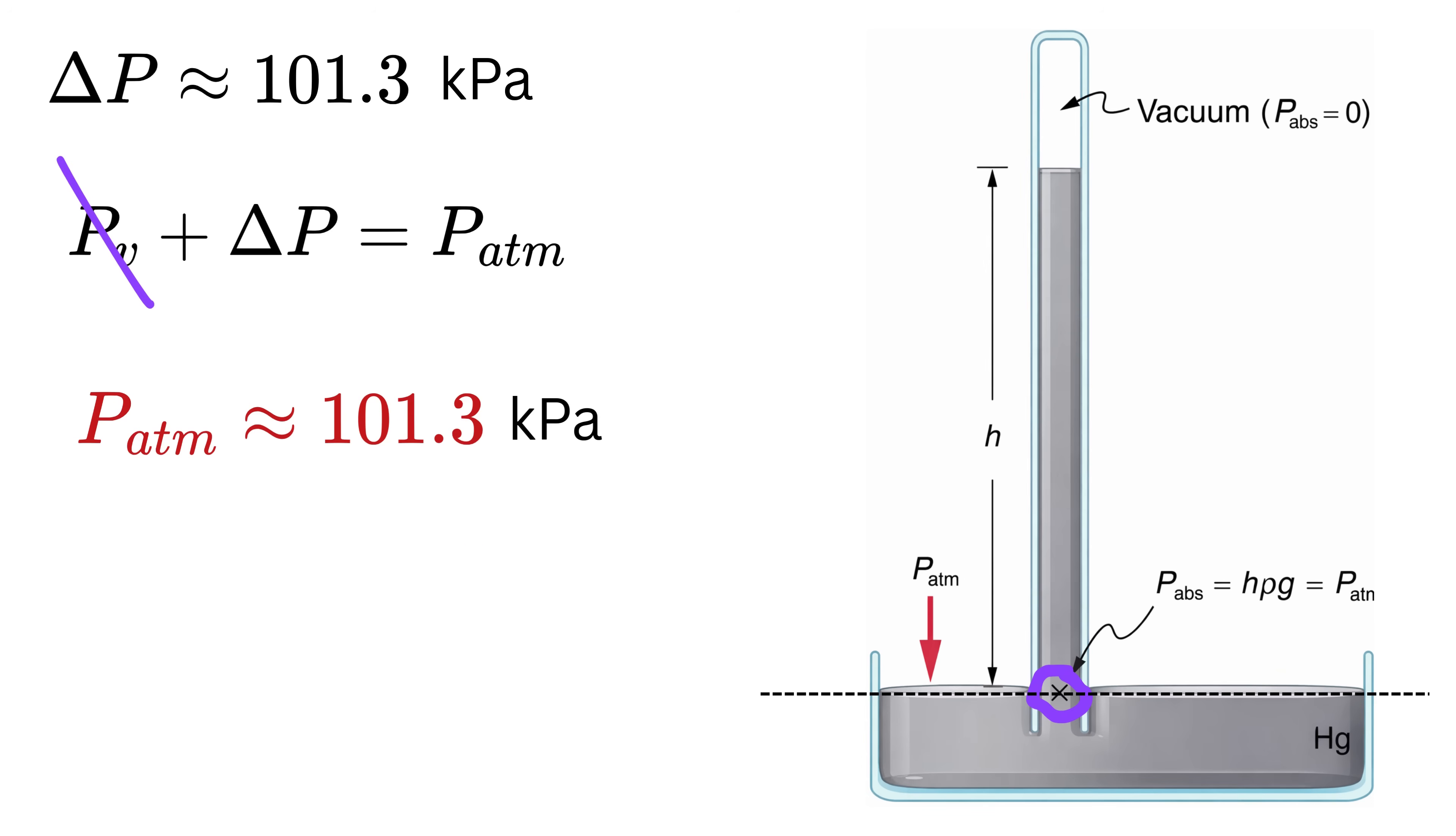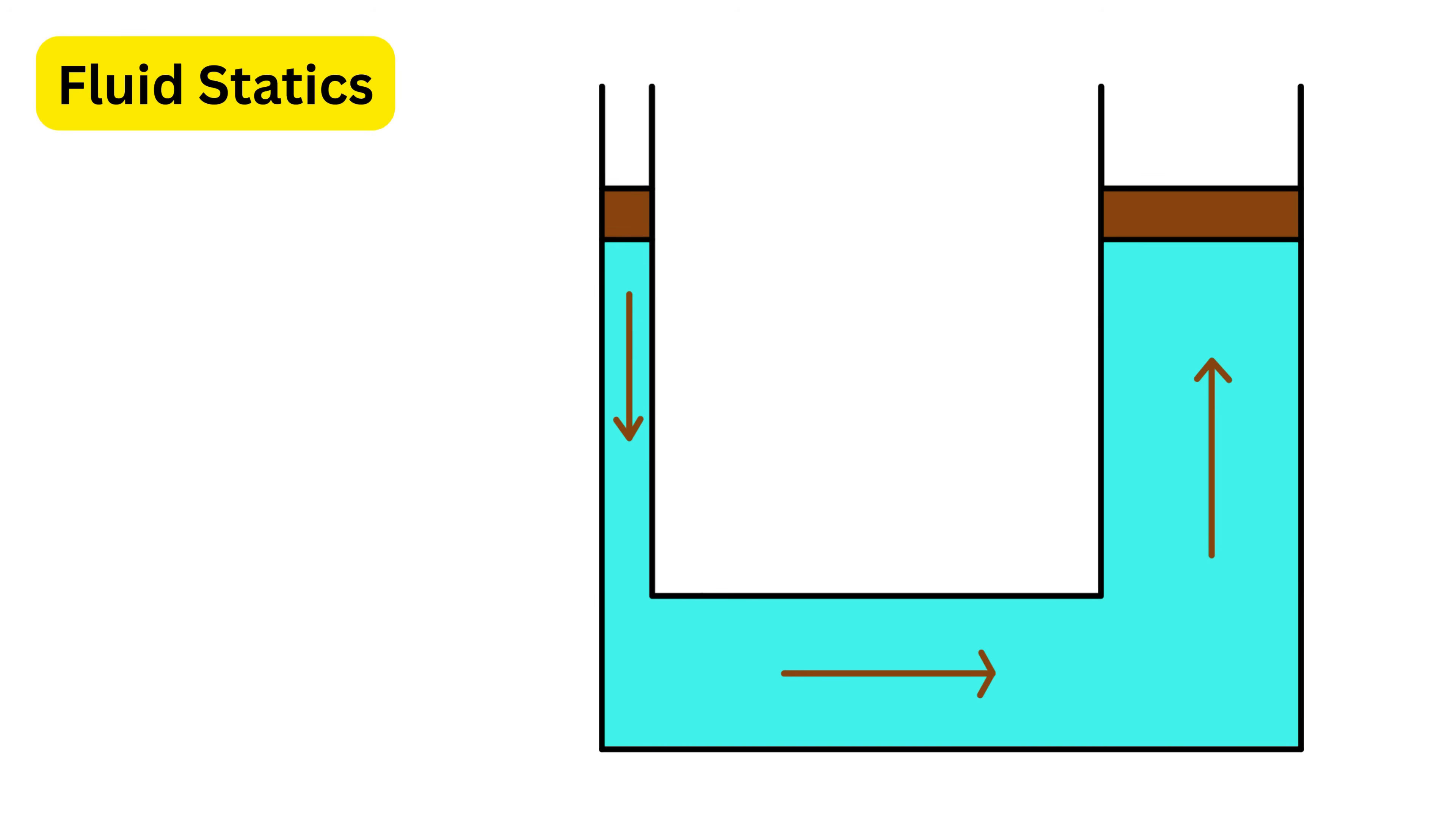If atmospheric pressure increases, the liquid column rises higher, and if atmospheric pressure decreases, the liquid column falls. Now the next important principle in fluid statics is Pascal's law.